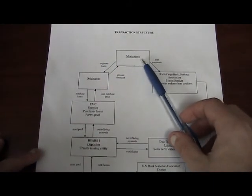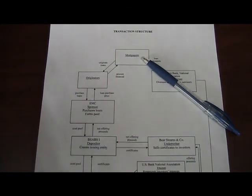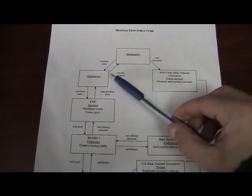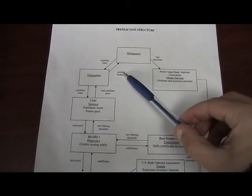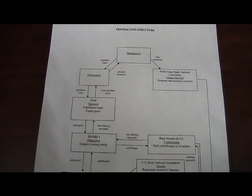It starts up here at the mortgagor. A mortgagor would be a person who wants to borrow money to buy a house and refinance. Go to your local bank and start the process. You're going to be working with this originator. Obviously, right here, you see amount financed. Maybe it's $100,000, $200,000, whatever.